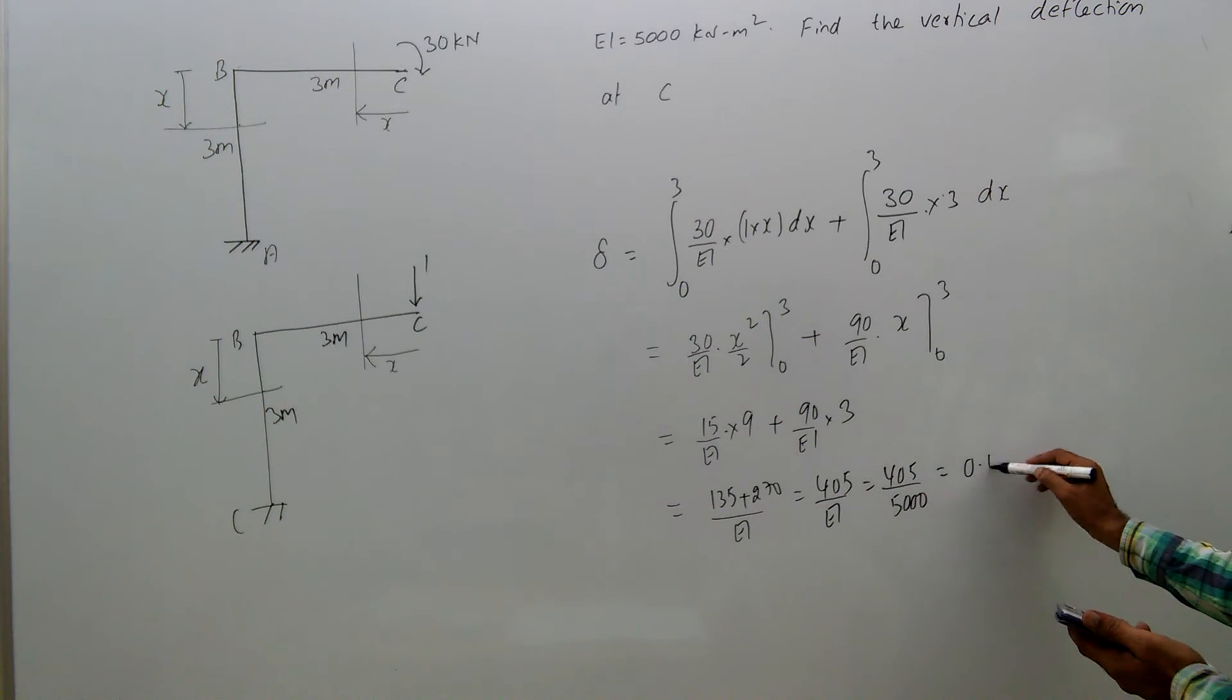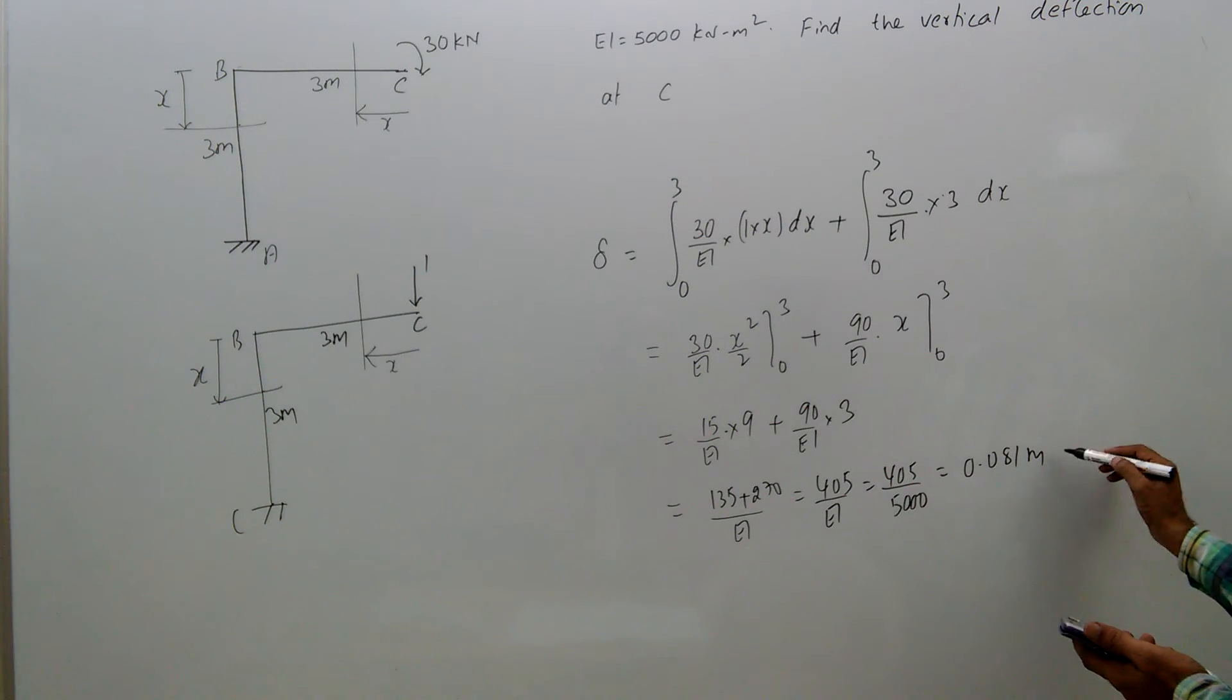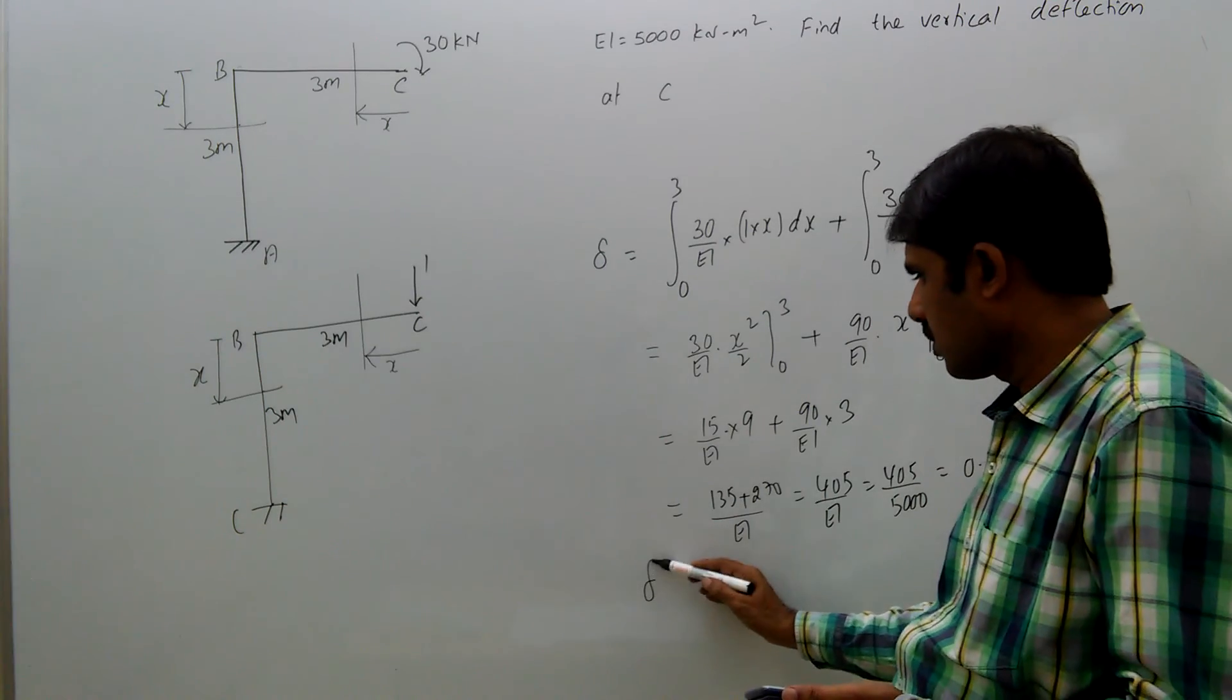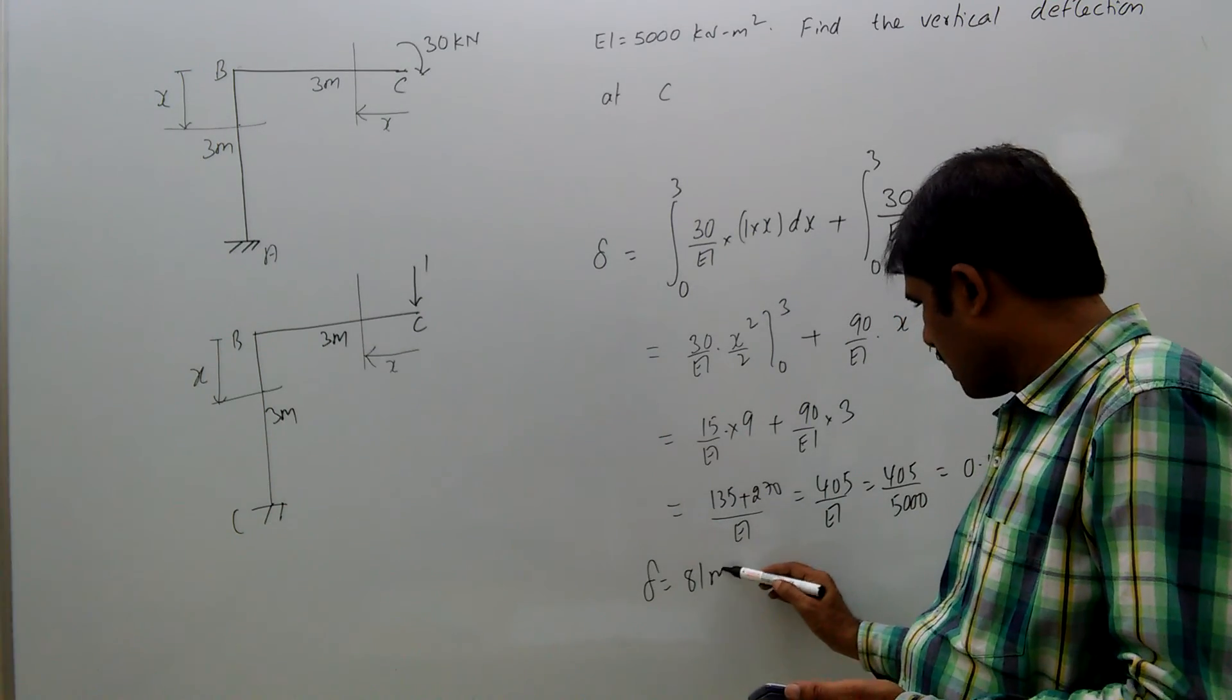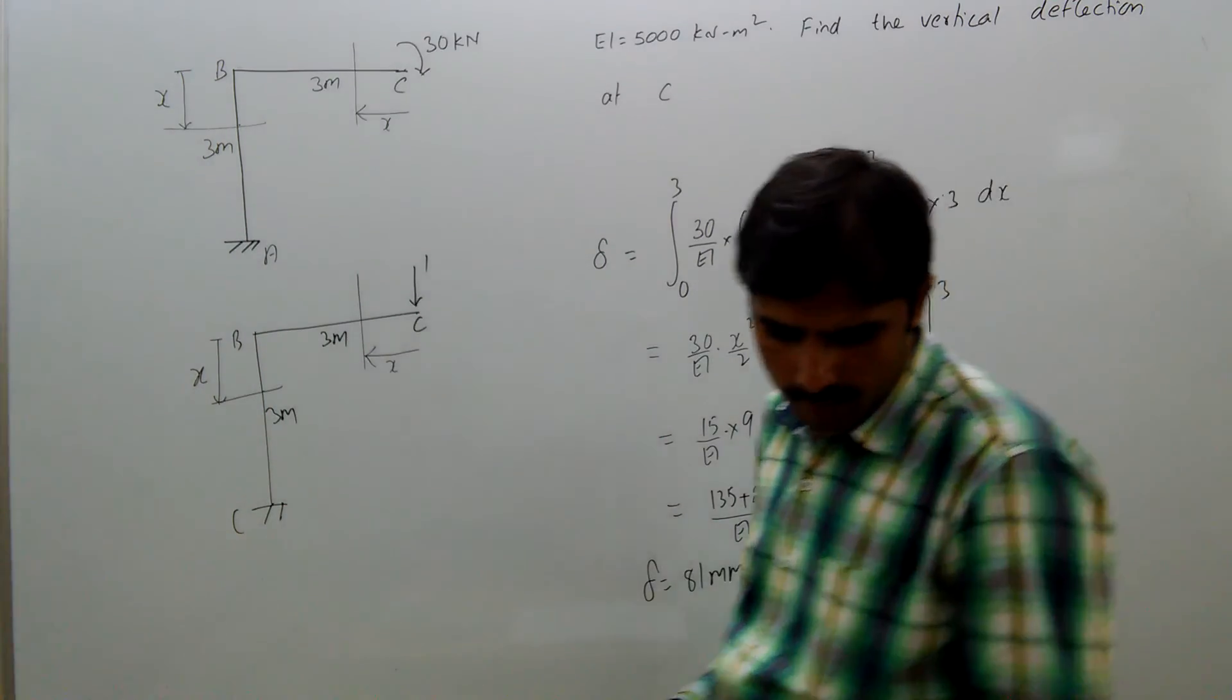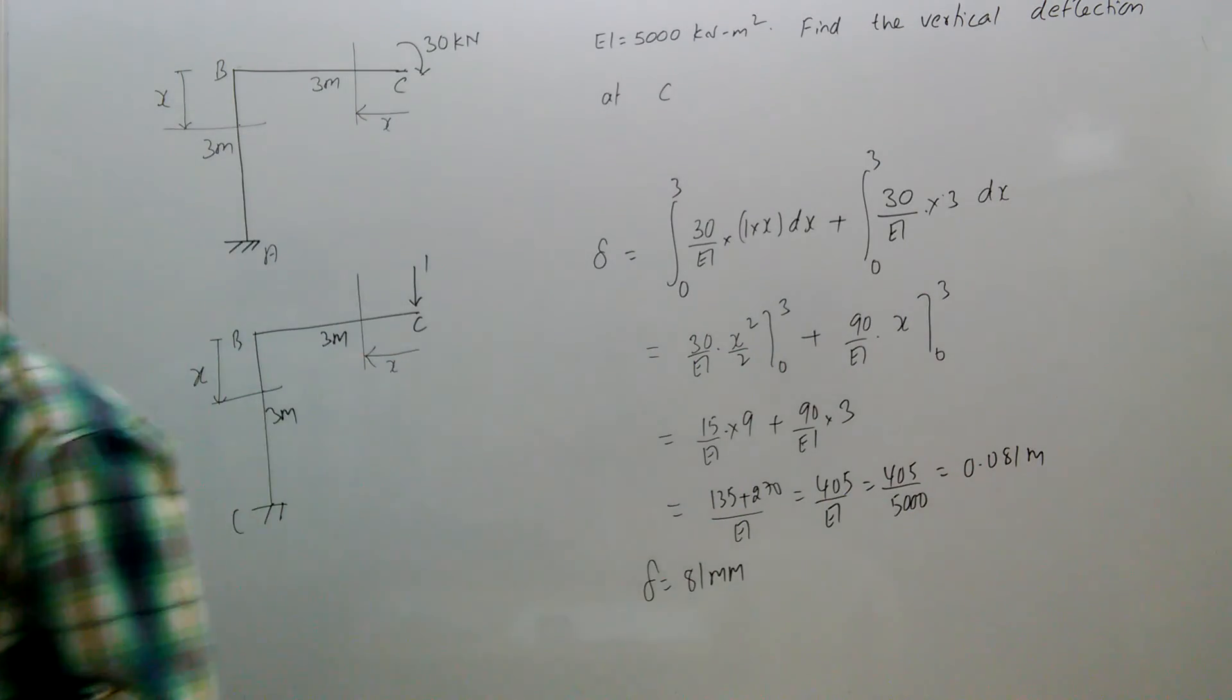0.081 meters, or delta equal to 81 millimeters, 81 millimeters vertical deflection.